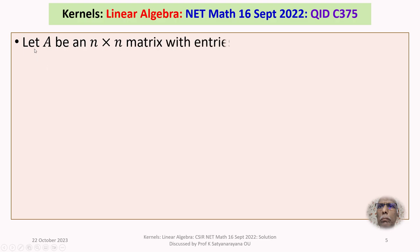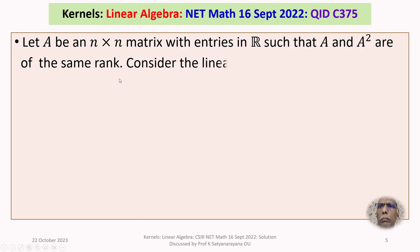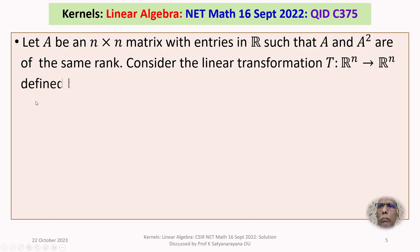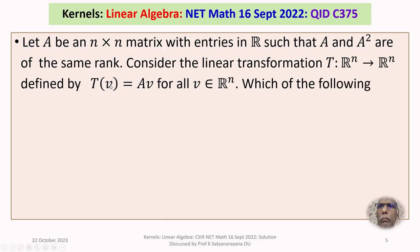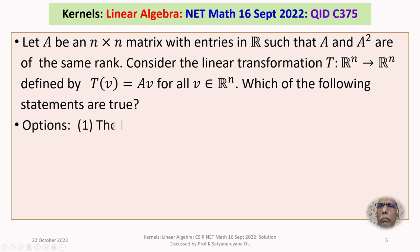The given problem is: let A be an n-by-n matrix with entries in the real numbers such that A and A-squared are of the same rank. Consider the linear transformation T from R^n to itself defined by T(V) = AV for all V in R^n. Which of the following statements are true?